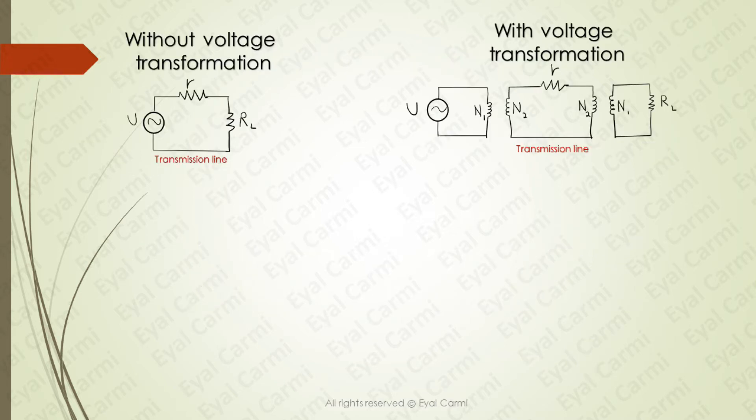Now we can explain how increasing voltage reduces the power loss. To do that, we need to compare oranges to oranges. That is, we need to compare two circuits. Both have the same power source U, transmission line resistance R and load resistance RL. The difference is that one of the circuits uses a transformer to increase voltage at the start of the transmission line and a transformer at the end of the transmission line to decrease the voltage back to the original level.